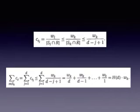We now simply add up these inequalities for all elements s in Sk. That is, the summation of cs for all s in Sk equals the summation of csj for j from 1 to d, which is less than or equal to the summation of wk/d + wk/d + wk/(d-1) + wk/(d-2) + ... + wk/1, which equals H(d) times wk.